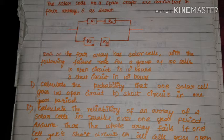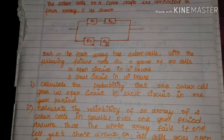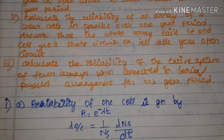Calculate: A) the probability that one solar cell goes open circuit, B) short circuit in a one year period. Also calculate the reliability of an array of two solar cells in parallel over one year period, assuming the whole array fails if one cell gets short circuit or all cells go open circuit. Finally, calculate the reliability of the entire system for four arrays connected in series or parallel arrangement for one year period.